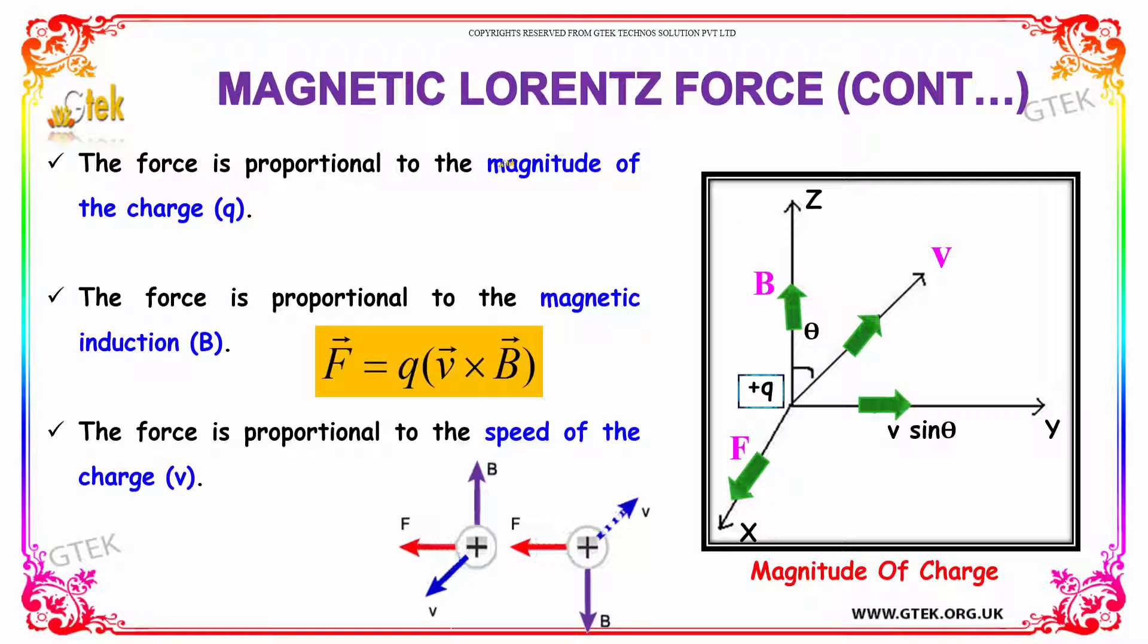This is your magnetic Lorentz force. The force is proportional to the magnitude of the charge Q, proportional to the magnetic induction B, and proportional to the speed of the charge V.